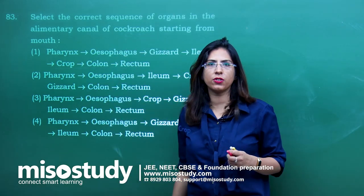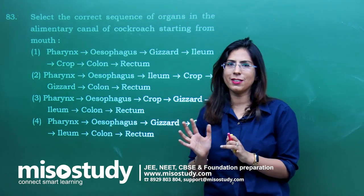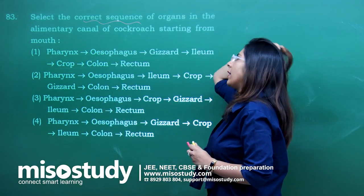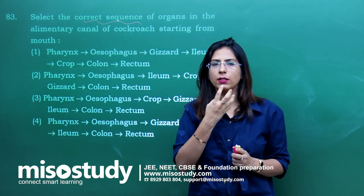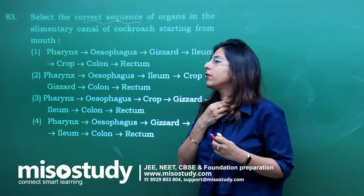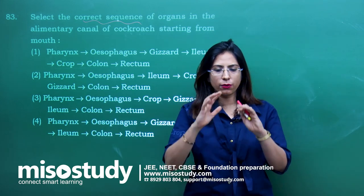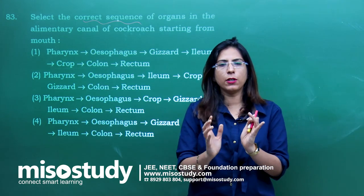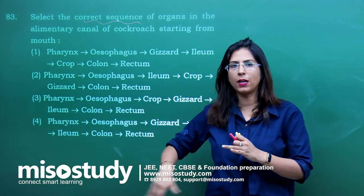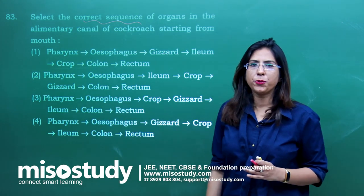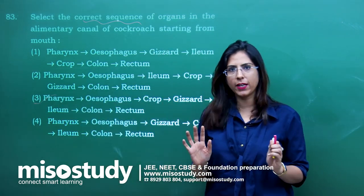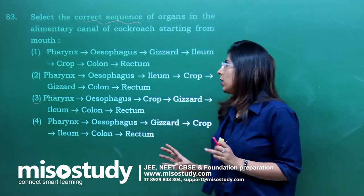Question number 83 — from structural organization in animals, the anatomy of cockroach. Select the correct sequence of organs in the alimentary canal of the cockroach starting from the mouth. The sequence is: mouth → pharynx → esophagus → crop → gizzard → ileum → colon → rectum. Option C is correct — pharynx, esophagus, crop, gizzard, ileum, colon, rectum. This was also one of the easiest questions.